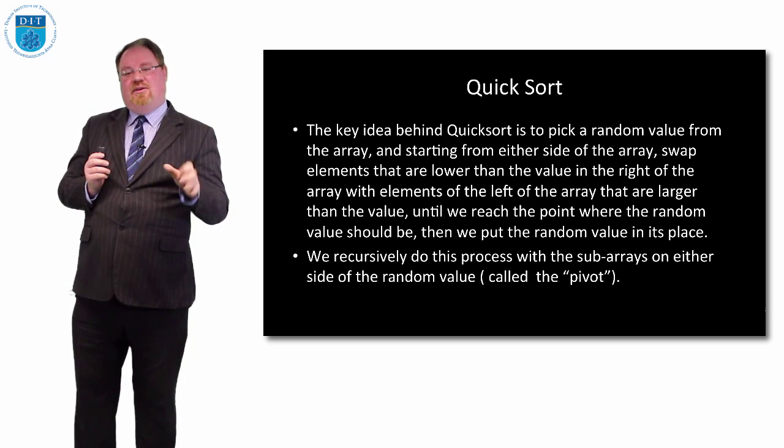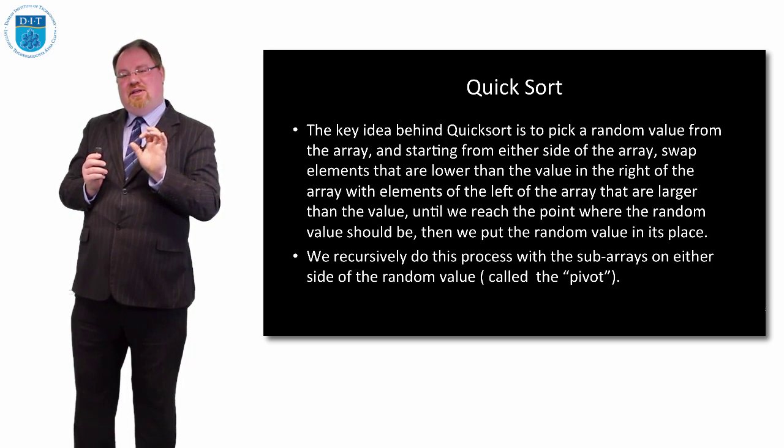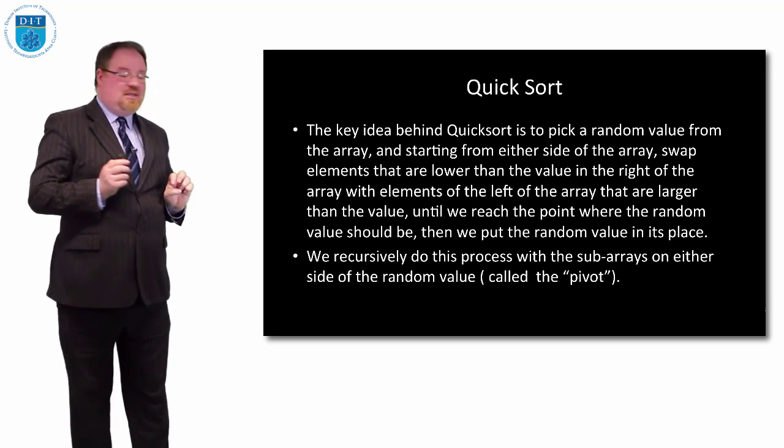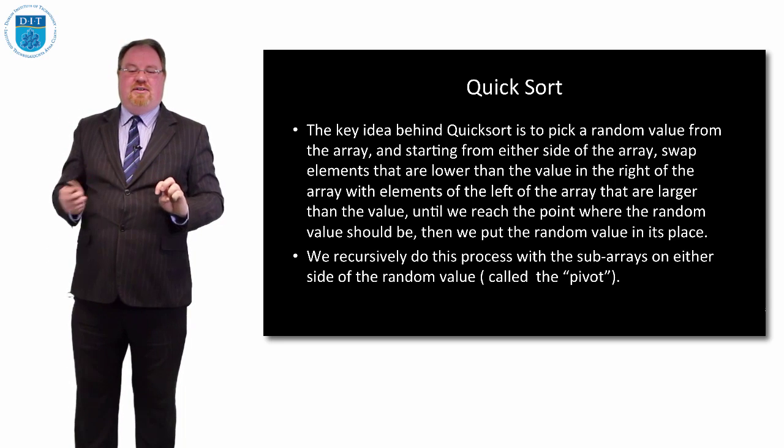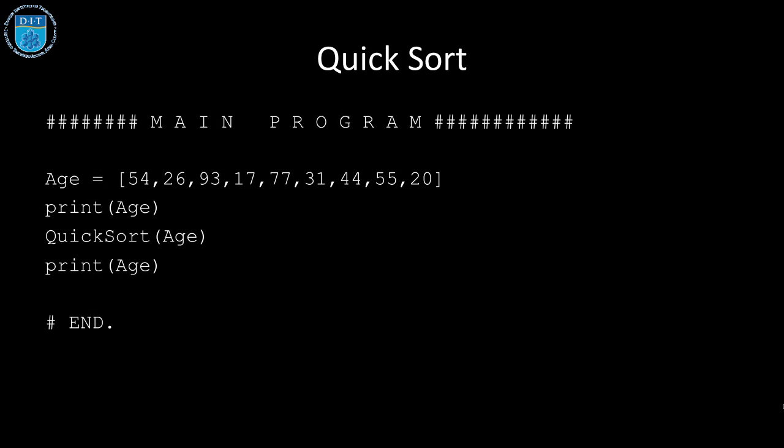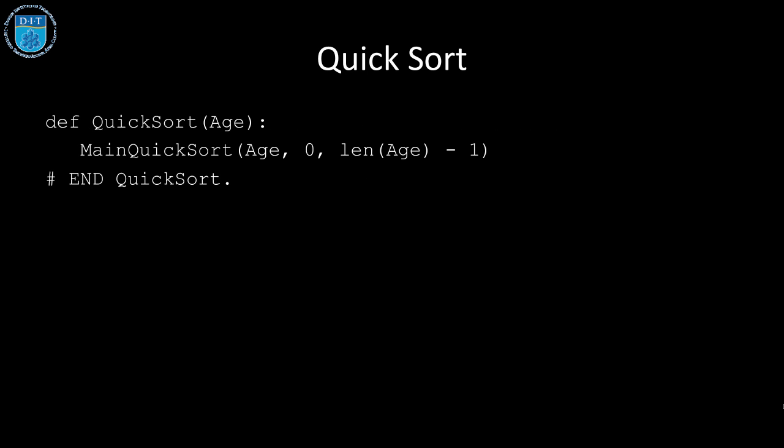Then we swap the pivot into its correct position, and we do that same quick sort recursively with the subarrays either side of the pivot. Our main program is exactly as before. We have a quick sort that simply calls main quick sort with the array name, where we start, and where we finish.